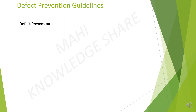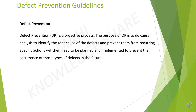Defect prevention is a proactive process. The purpose of defect prevention is to do causal analysis to identify the root cause of the defects and prevent them from recurring. Specific actions will then need to be planned and implemented to prevent the occurrence of those types of defects in the future. The defects may have been identified on other projects as well as in earlier stages or tasks of the current project. Defect prevention activities are also one mechanism for spreading lessons learned across projects.